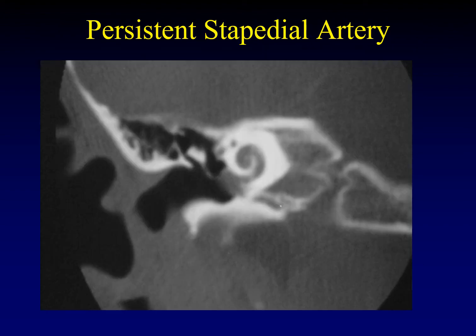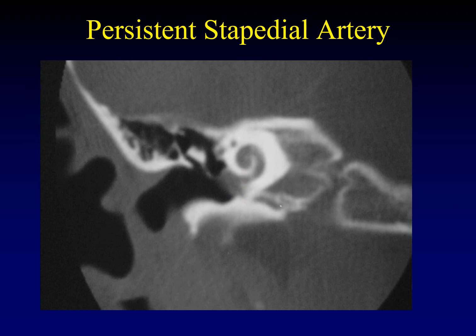Another enlarged collateral artery is the persistent stapedial artery. There is a normal stapedial artery that runs between the crura of the stapes. When it becomes enlarged, it splays the stapes crura apart and covers the oval window. Though it looks like an oval mass on a single image, on sequential images it will be tubular. The persistent stapedial artery becomes enlarged when the foramen spinosum is stenosed, and the stapedial artery is used to communicate between the internal carotid artery and the middle meningeal artery.